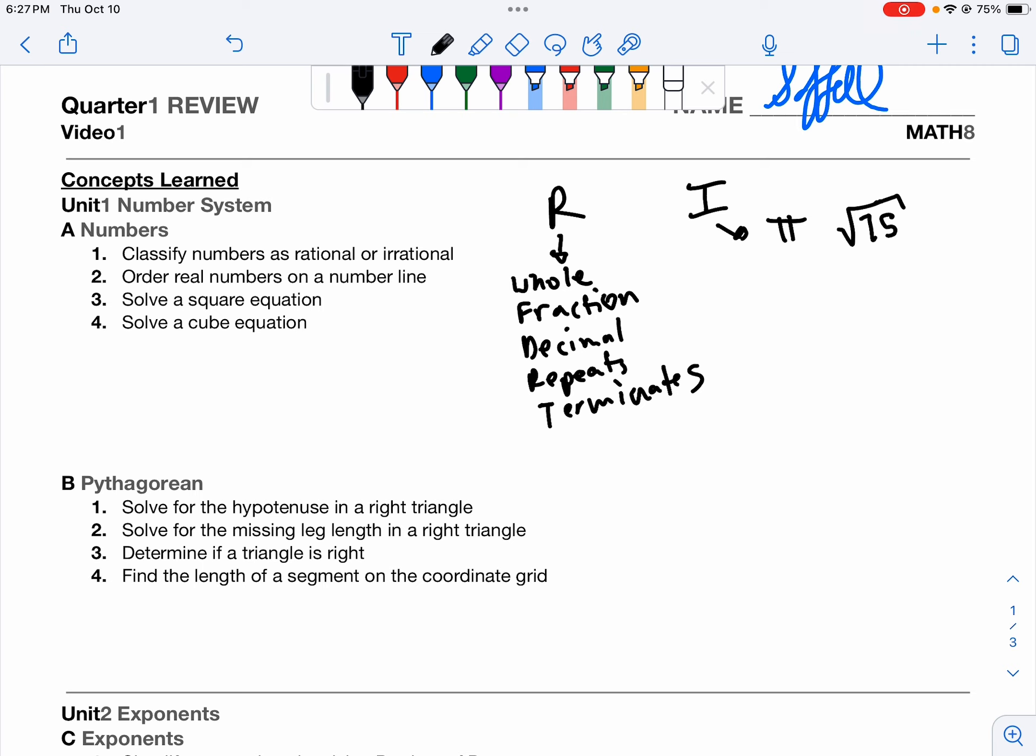And then irrational would be things like pi and the square root of 75 where it's not a whole number. We're going to order things on the number line. Solving a squared and a cubed equation might look like x squared equals 16. We take the square root of both sides. We get x equals plus or minus 4.